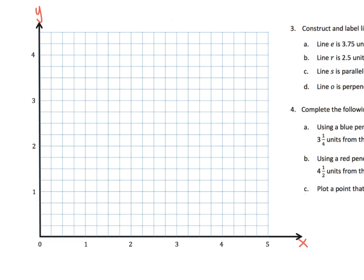And so the line is, where's 3.75? 3.75 is right here. And so the line is going to be, and because it says line, not line segment, it means it's going to go forever in both directions, and we're going to label that E.